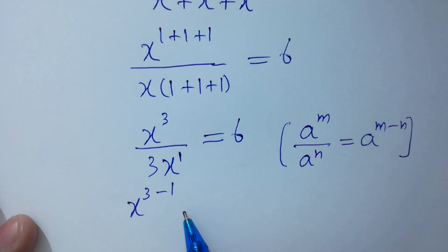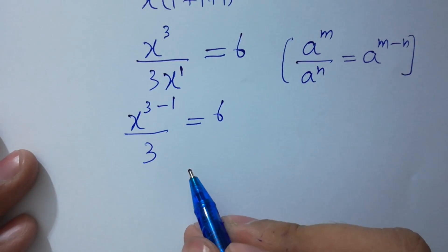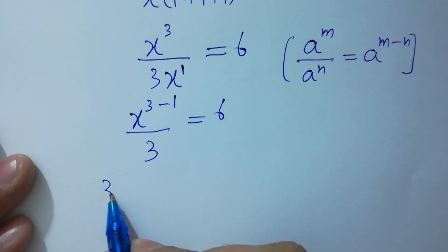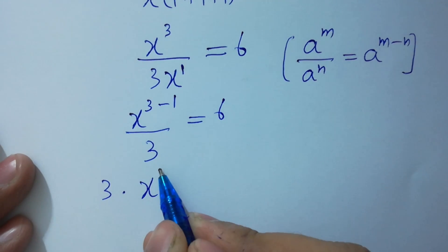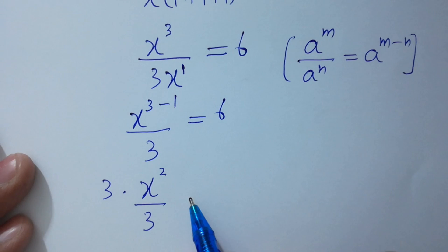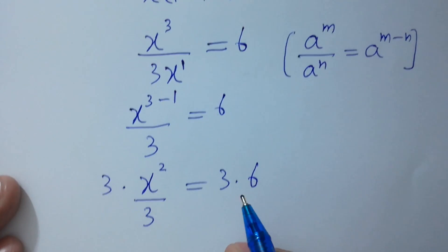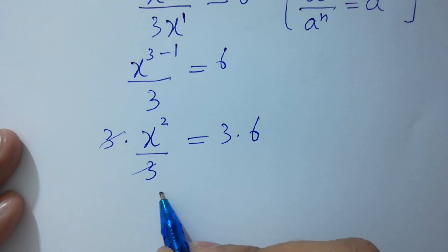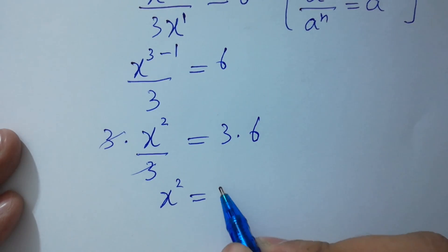In the next step, equal to 6 and 3 as it is. Now I am going to multiply by 3 on both sides: 3 times x to the power 3 minus 1, which is 2, over 3 equals 3 times 6. Here 3 and 3 will be cancelled. We have x squared equal to 6 times 3, which is 18.